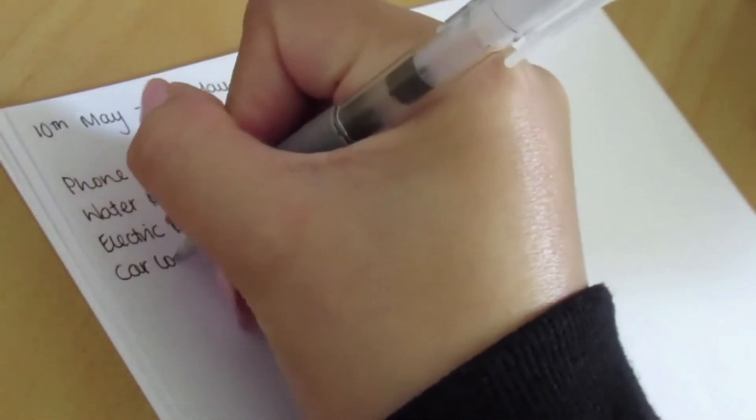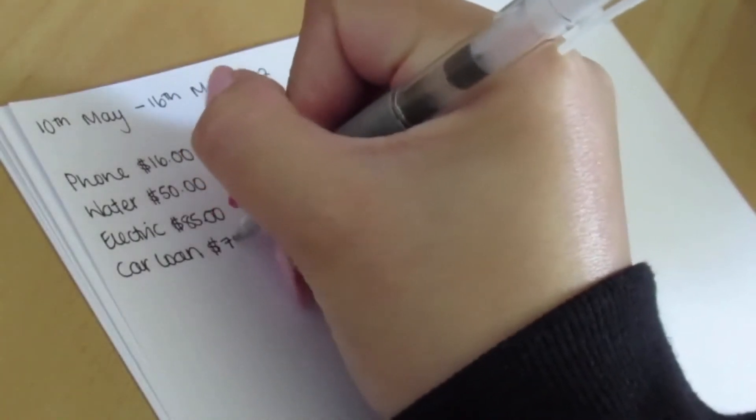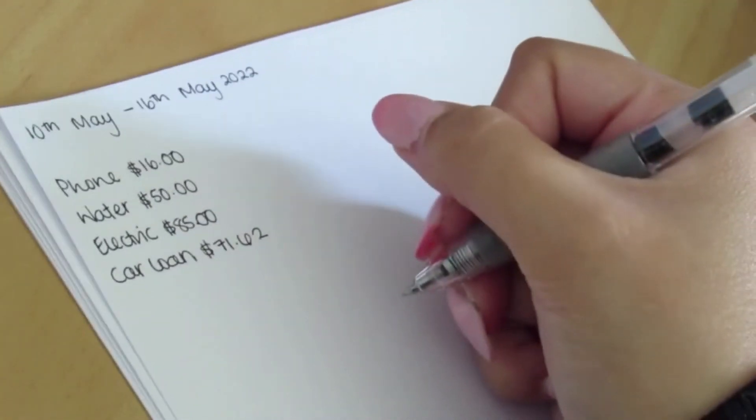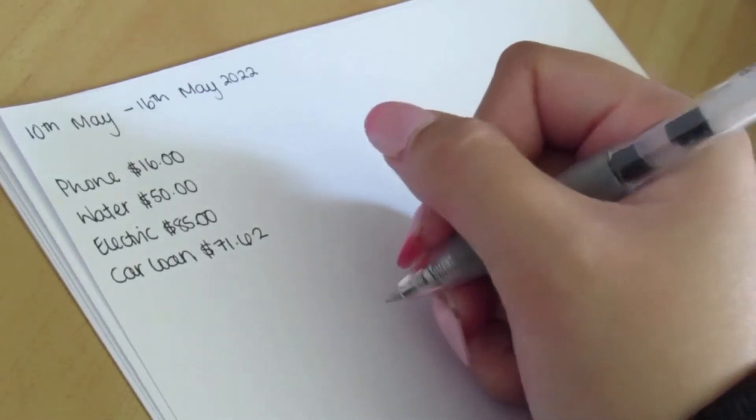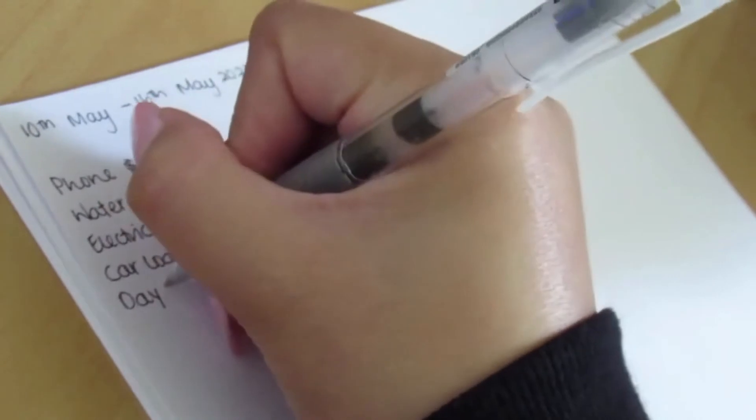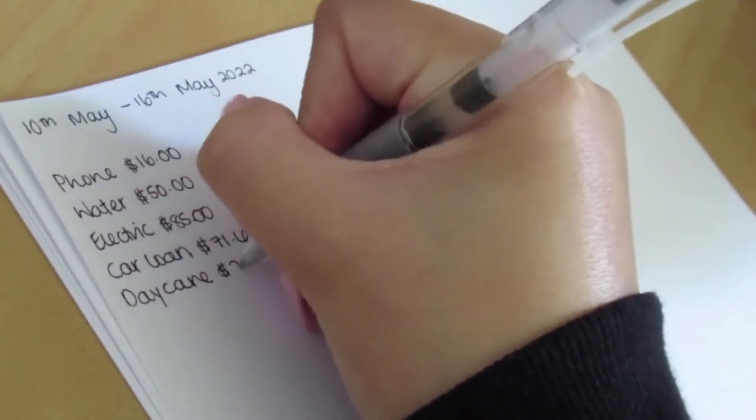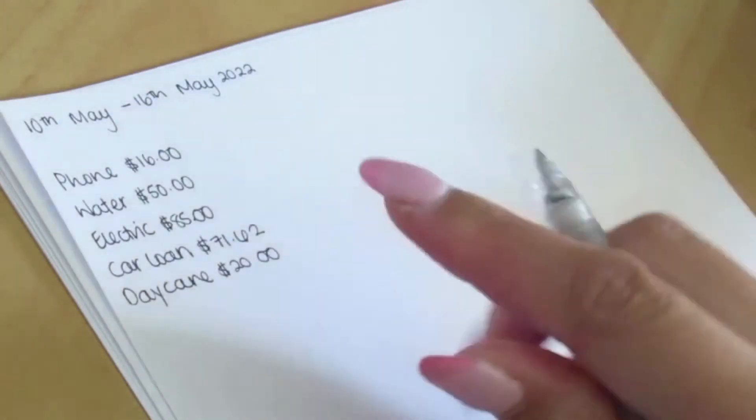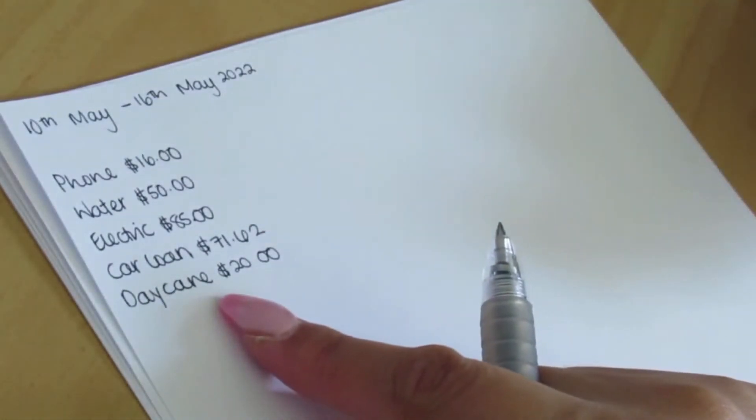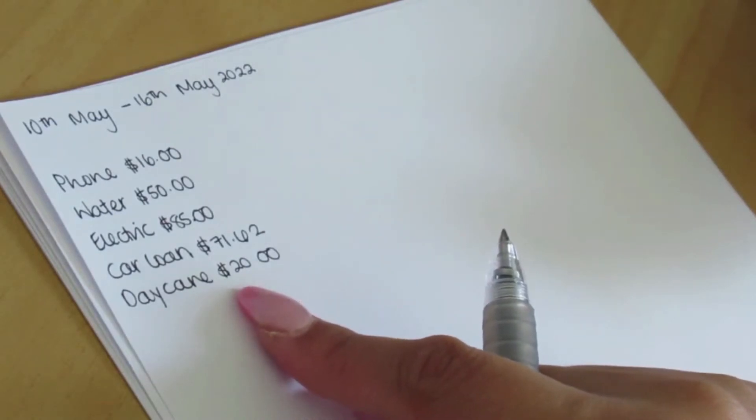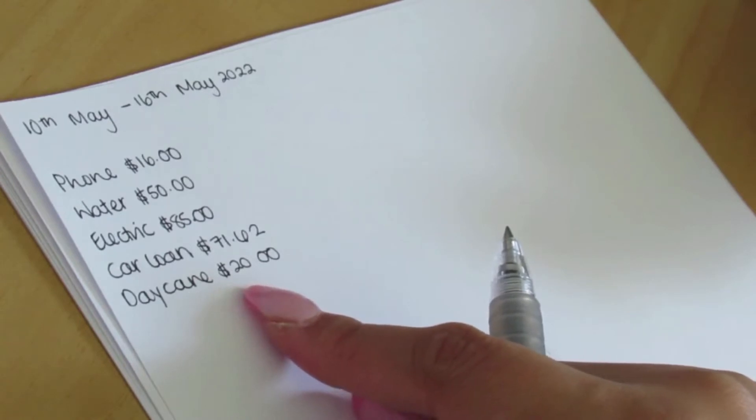After electricity we have my car loan, and that is $71.62 a week. Then we have my daughter's daycare, which is $20 a week. This is really nice. It includes her food and everything that she needs except for her nappies. She's currently in pull-ups anyway, so she'll be toilet training pretty soon. $20 a week for two days doing six hours per day, you can't beat that.